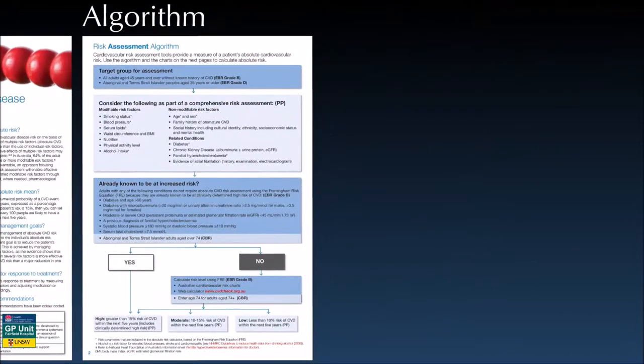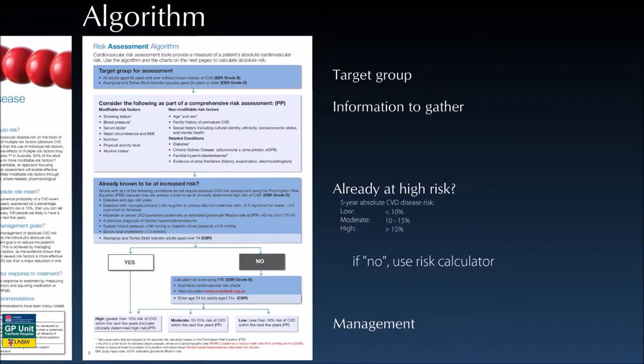This is the algorithm. In essence, we need to identify the target group — who do we apply the risk assessment algorithm on? What information do we gather on these individuals? Is the patient in a special category that automatically places them at high risk? For those not in such a category, we then use a risk calculator. The management of patients is guided by the patient risk category. So: target group, information gathered, risk stratification, management based on risk.